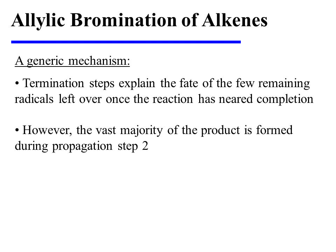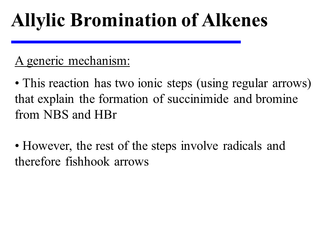Termination steps explain the fate of the few remaining radicals left over once the reaction has neared completion. It's important to note that the vast majority of the product is formed during propagation step 2. This reaction is somewhat unusual in that it consists of both heterolytic and homolytic steps — two ionic steps using regular mechanistic arrows explain the formation of succinamide and bromine from NBS and HBr, while the rest of the steps involve radicals and therefore utilize fishhook arrows.